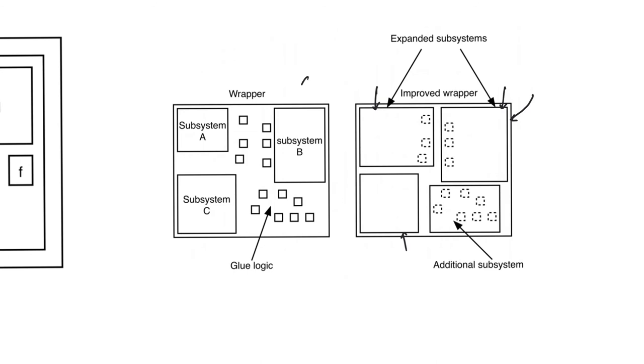If we have a design that looks like something on the left, then that's a bad design because it contains subsystems and these subsystems have a lot of random small logic in between them that helps to connect them together or to do some random function. This kind of logic is called glue logic and it is not well behaved.